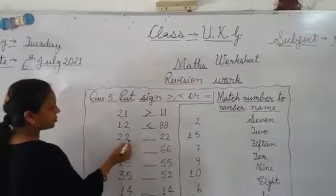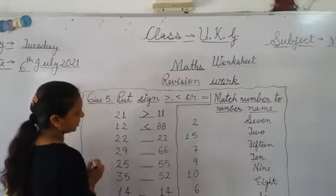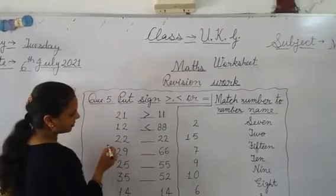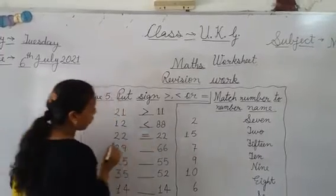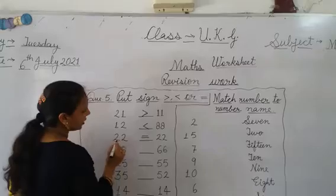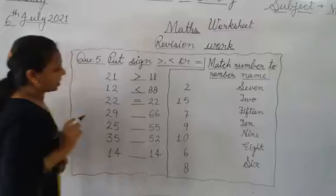This is 22 and 22. Which is greater than this is, tell me. We will put sign equal here because these are equal here. 22 and 22.